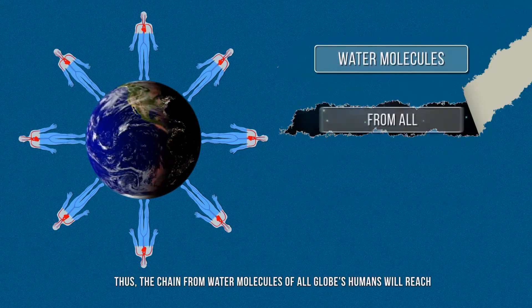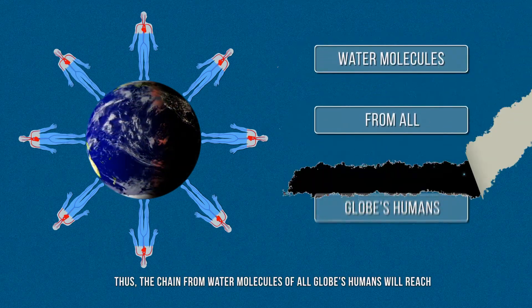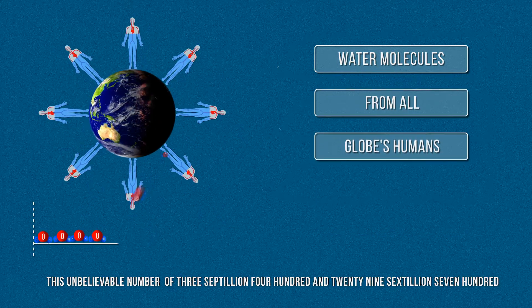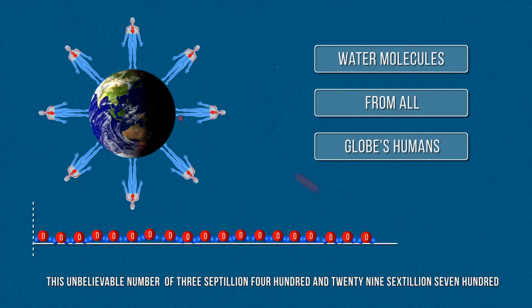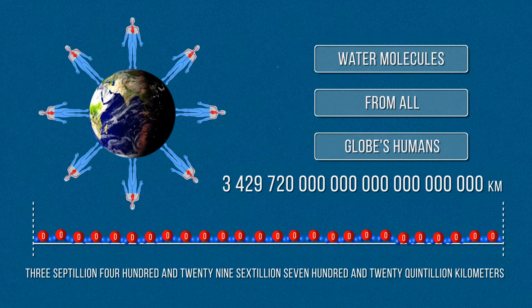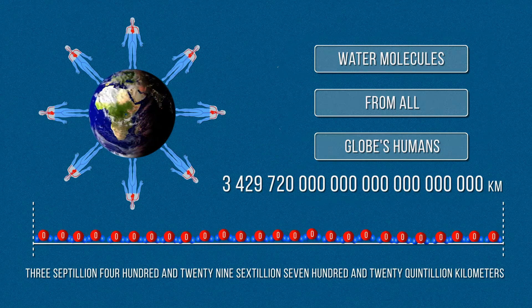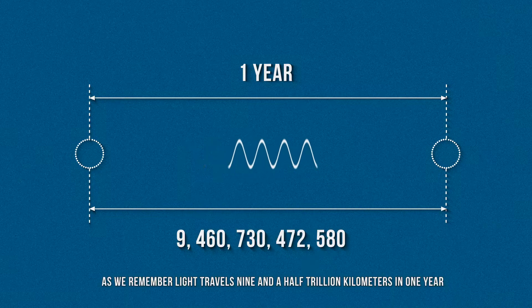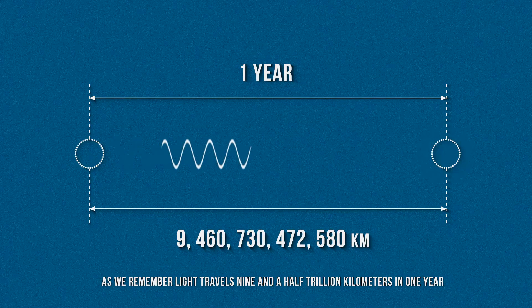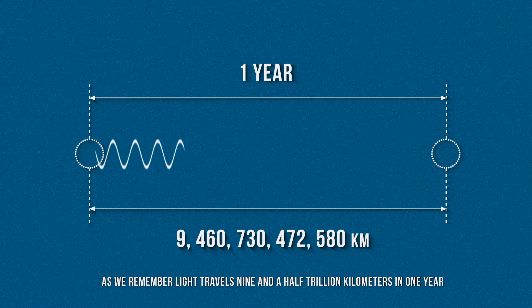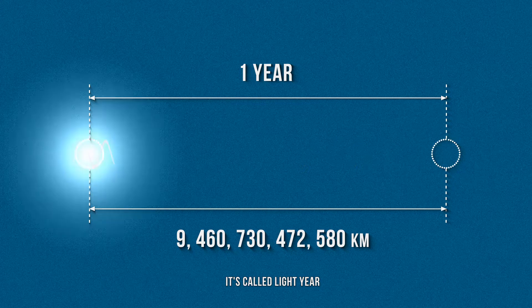Thus the chain from water molecules of all humans will reach the unbelievable number of 3 septillion 429 sextillion 720 quintillion kilometers. As we remember, light travels 9 and a half trillion kilometers in one year. It's called a light year.